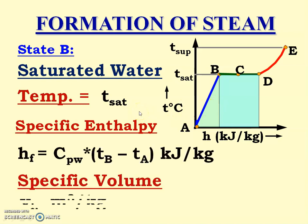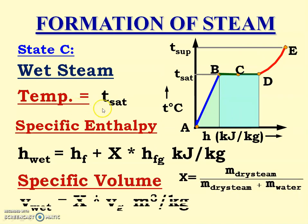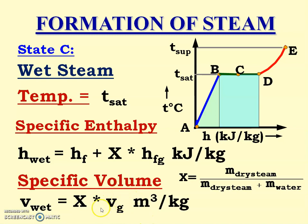At point B — saturated water — temperature is T_sat, specific enthalpy is Cp of water times (T_b minus T_a), and specific volume is Vf. Hf and Vf can be read directly from the steam table, as can T_sat. At point C — wet steam — temperature is T_sat, specific enthalpy is Hf plus X times Hfg (kJ/kg). T_sat, Hf, and Hfg are all available from the steam table; we only need X. Specific volume is X times Vg, where Vg is taken directly from the steam table.